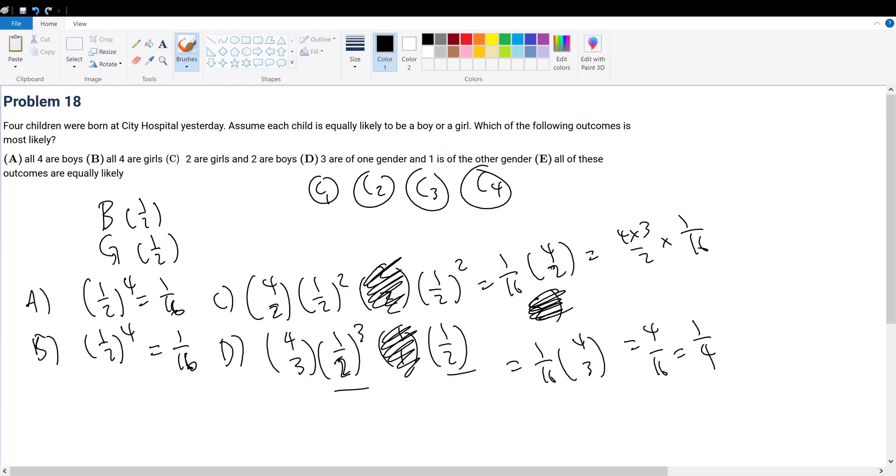And this is the same thing as 4 times 3 divided by 2 times 1 over 16, which is 6, so 6 over 16. Well, that's 4 over 16. So basically, we have this.